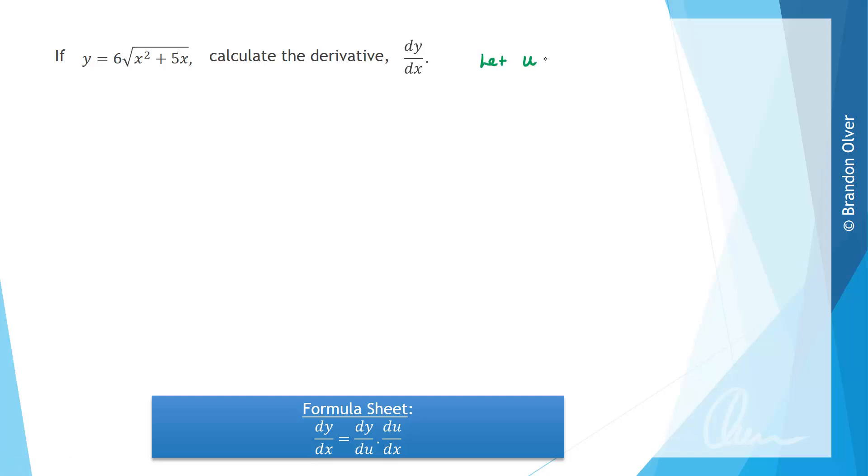So what we're going to do is let u be the inner function. In this case the inner function is the x squared plus 5x that's inside the square root. So u equals x squared plus 5x. Therefore y can now be written as 6 times the square root of u.